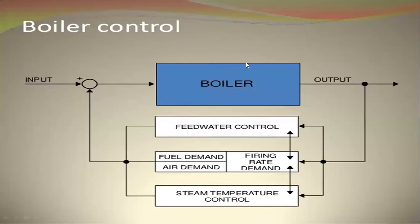Looking at boiler control: we have a boiler with inputs and outputs, taking feedback at different stages. We are controlling three things: number one, feed water control; number two, steam temperature control; number three, firing rate demand. All three feedback parameters are given to regulate the inputs to the boiler — whether it is the fuel, the air, the feed water, or the steam temperature control. This is the basic flow chart of boiler control.